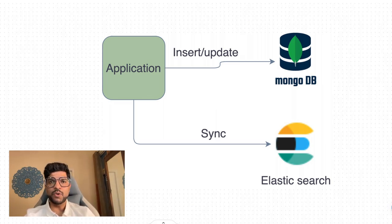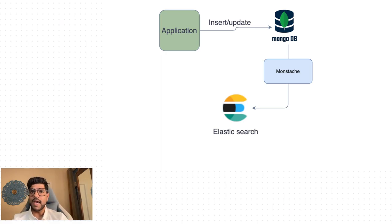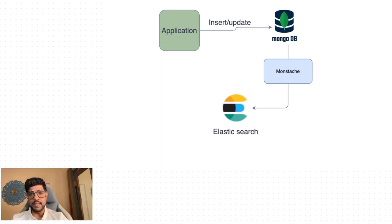Finally, we have Monstash. In this video we are going to talk about it. How Monstash works is: whenever any change event is happening within the database, it listens to those events and based on those events it will update Elastic. So here we have real-time update of the data. We are going to see how we can install Monstash and how we can configure it to update data in Elastic.